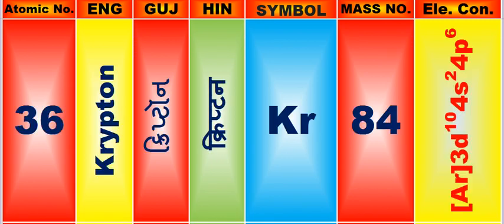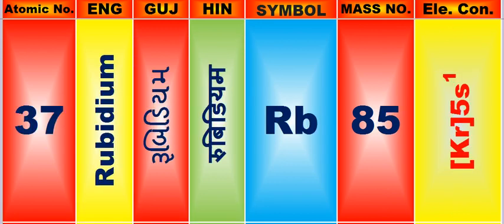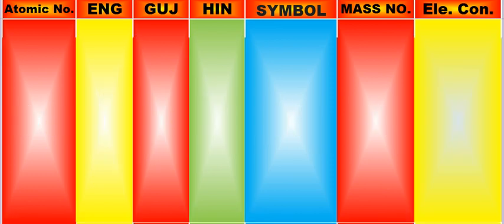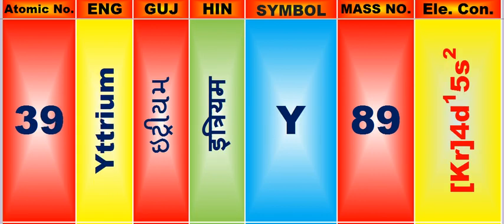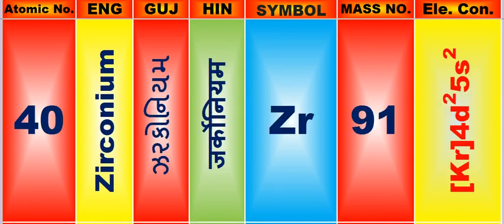Atomic number is 36, name of atom is Krypton. Atomic number is 37, name of atom is Rubidium. Atomic number is 38, name of atom is Strontium. Atomic number is 39, name of atom is Yttrium. Atomic number is 40, name of atom is Zirconium.